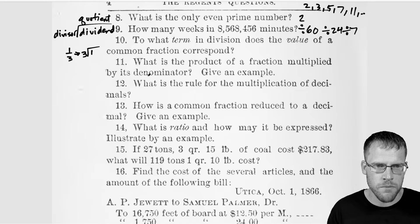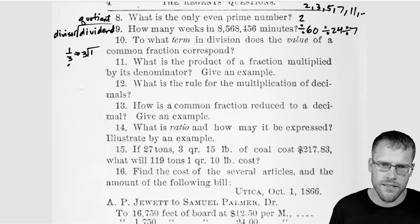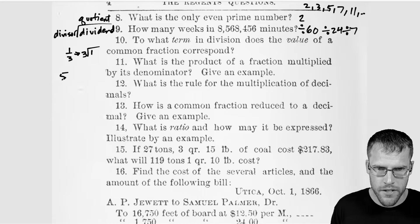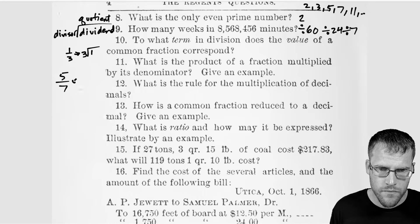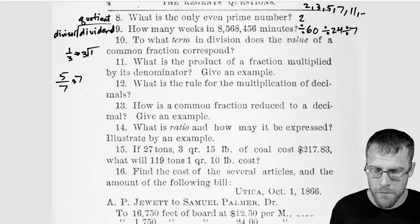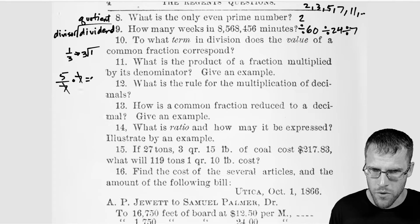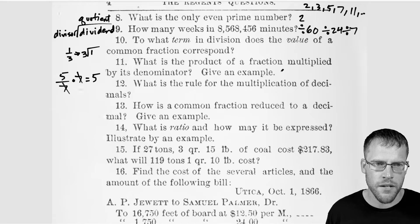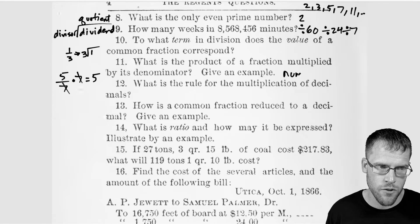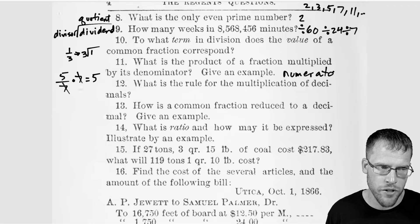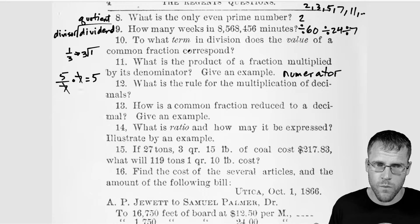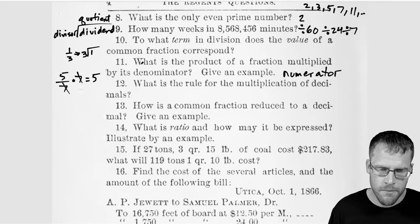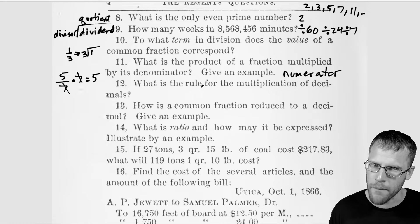So 11, what is the product of a fraction multiplied by its denominator? All right, that's an okay question. So let's say I had five over seven. So five over seven, and we multiply by seven, and we multiply by the denominator, this will cancel out and we'll have just five. So the product of a fraction multiplied by its denominator is just the numerator. Okay, that gets the numerator by itself. So very cool. So they're just once again, testing you more on the process, and then hey, create an example. So that's some high level stuff here. They were really setting the bar high back then.